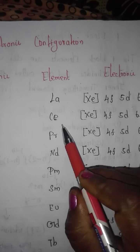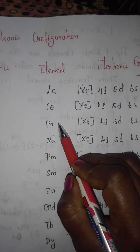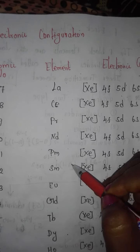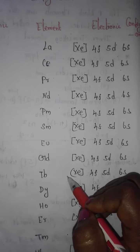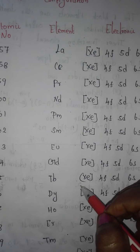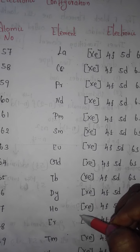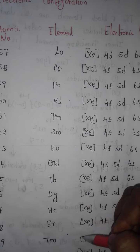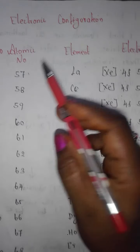The 15 lanthanide elements from atomic numbers 57 to 71 are: lanthanum, cerium, praseodymium, neodymium, promethium, samarium, europium, gadolinium, terbium, dysprosium, holmium, erbium, thulium, ytterbium, and lutetium.